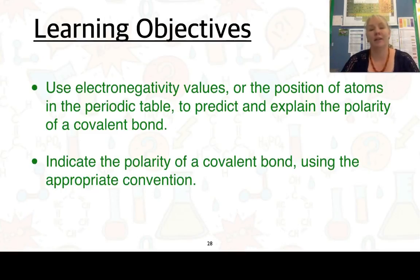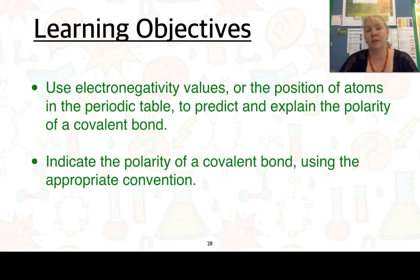Hi, this is the second part in our covalent bonding videos. The learning objectives we're looking at here are to use electronegativity values or the position of atoms in the periodic table to predict and explain the polarity of a covalent bond, as well as to indicate the polarity of a covalent bond using the appropriate convention.